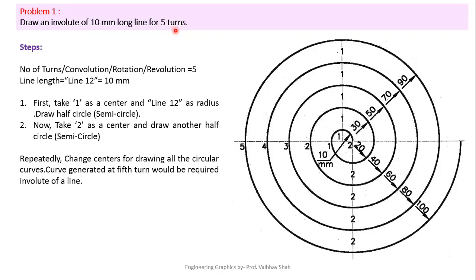Let us understand what is meant by turns. Number of turns means number of convolutions, number of rotations, or number of revolutions — here that number is 5. If we draw a semicircle that is called a half turn or half convolution or half rotation. If we draw one complete circle of 360 degrees then it is known as one complete turn or convolution or rotation or revolution. So here we are talking about 360 degrees times 5.